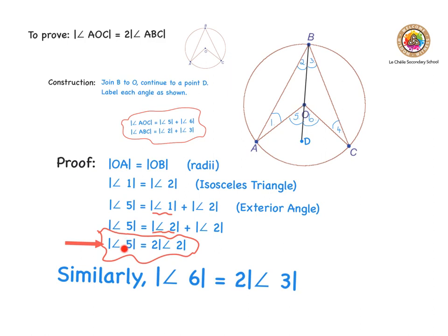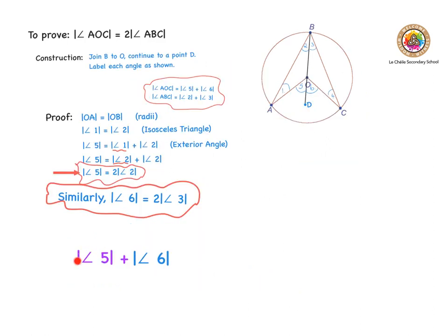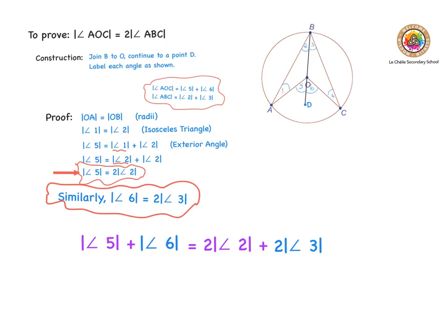Now I have everything in terms of what I want. I add angle five plus angle six, because that equals angle AOC, and check whether that gives twice angles two and three added together. Angle five plus angle six equals two times angle two plus two times angle three. I can see the factor of two is common, so factorizing gives two times angle two plus angle three.